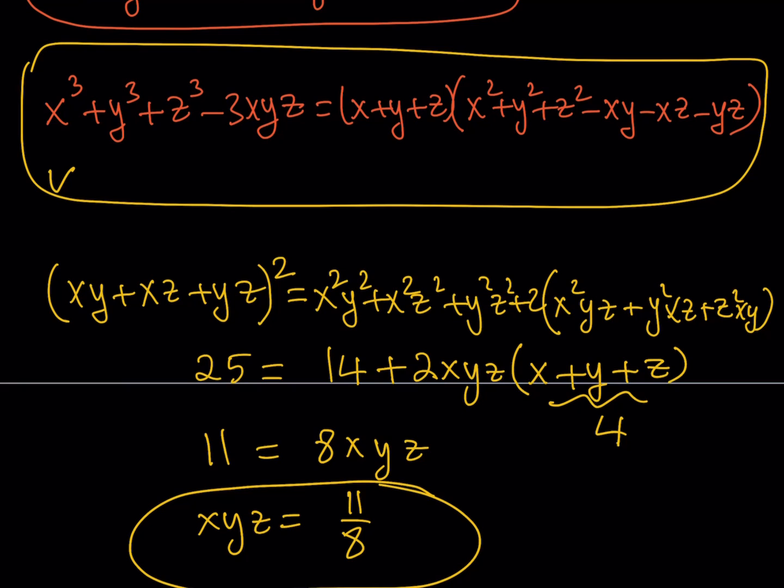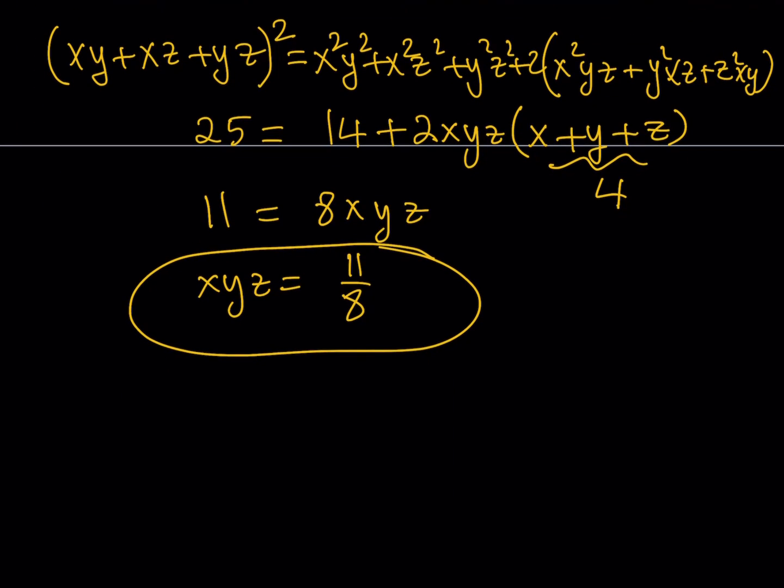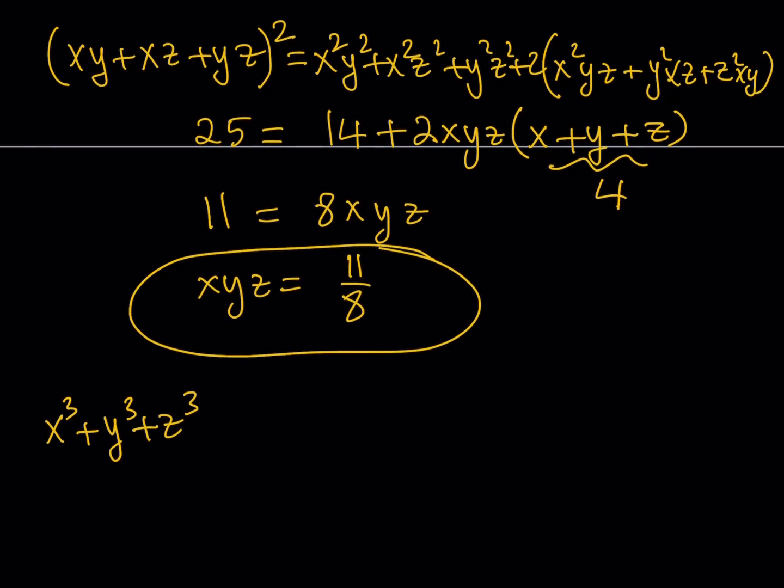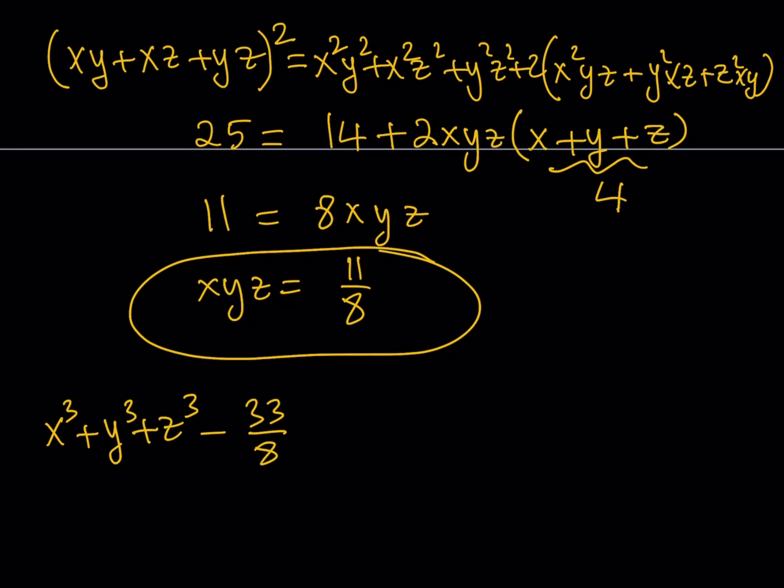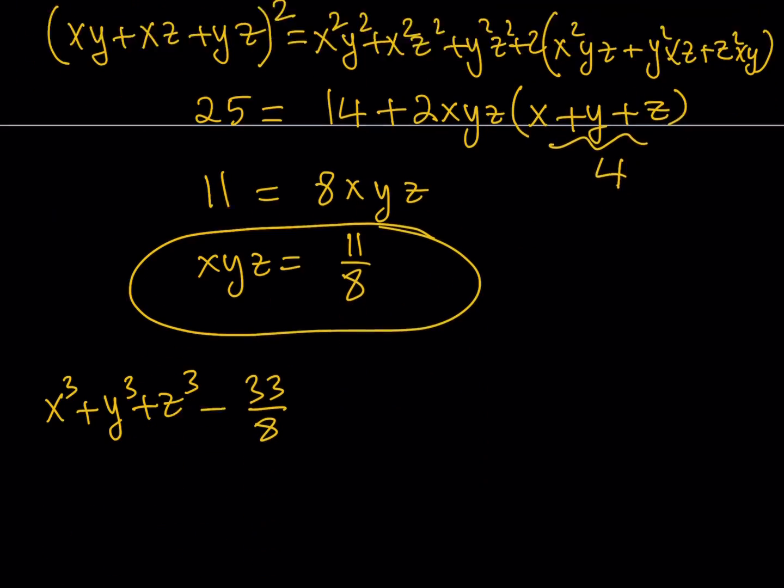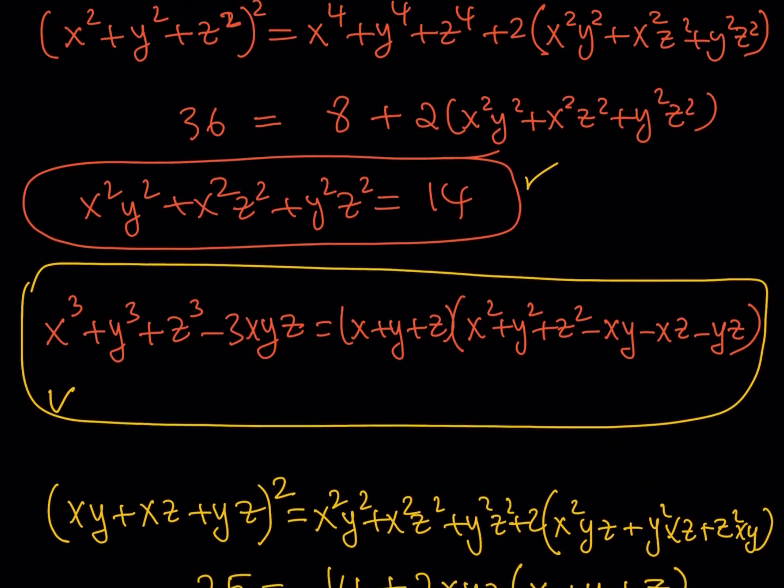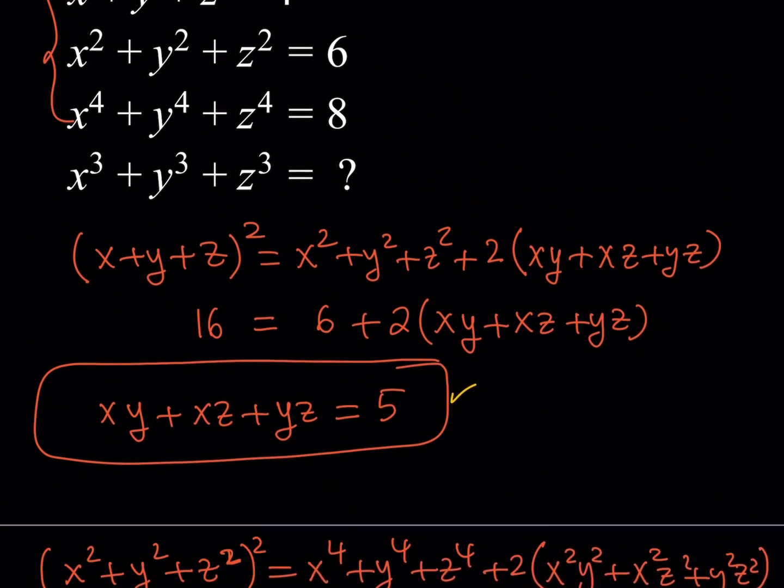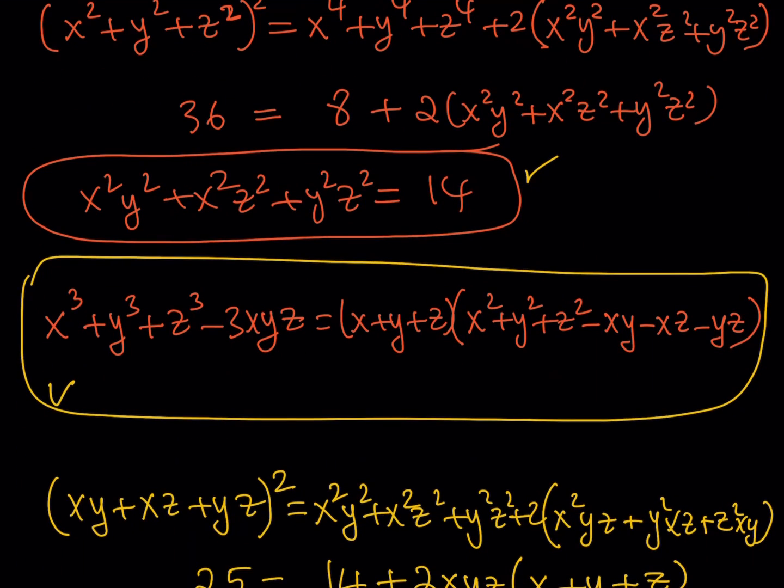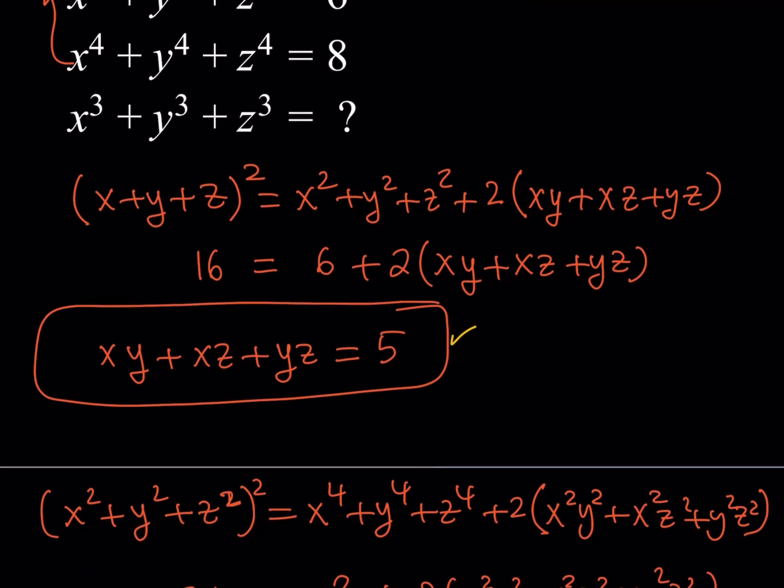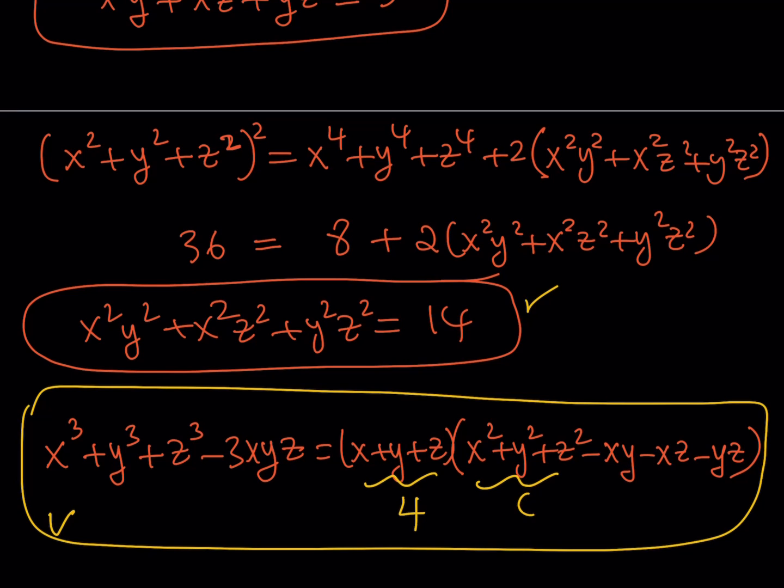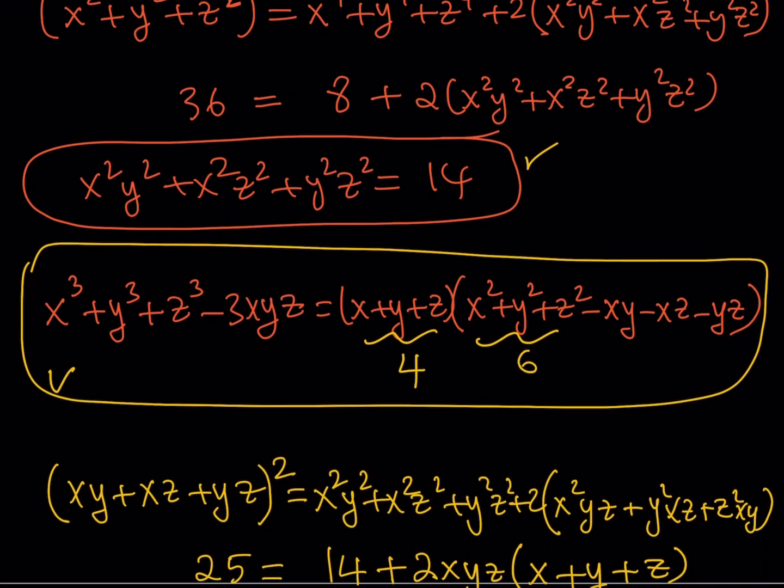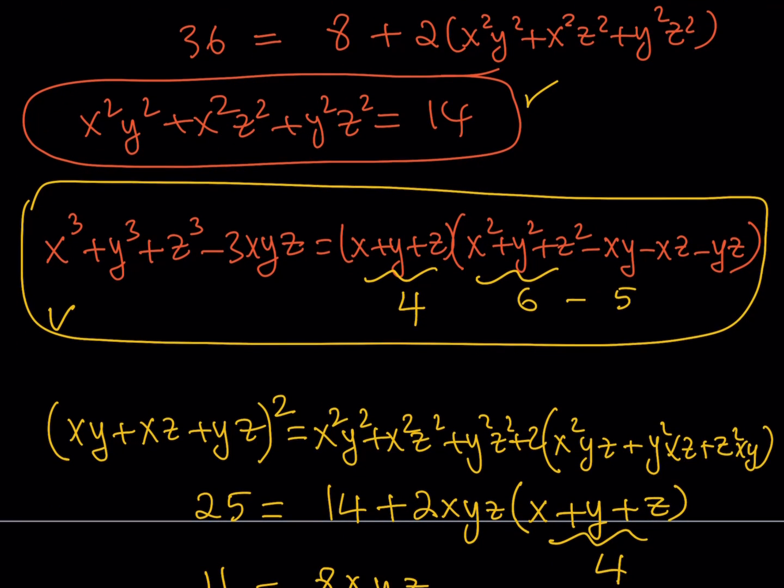So we do now have xyz which pretty much means that we have everything we need because now I can use this equation. x cubed plus y cubed plus z cubed minus 3xyz. So I'm going to multiply this by 3, that's going to give me 33 over 8, and I'm going to subtract it from the sum of the cubes. On the right hand side of the expression you're going to have x plus y plus z and then x squared plus y squared plus z squared and then minus that. x plus y plus z is equal to 4, the sum of the squares is given as 6, and the xy plus xz plus yz is equal to 5. So this is just going to be 6 minus 5 which is 1. This is 4. So in other words this should equal 4.